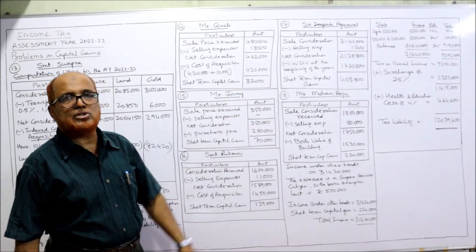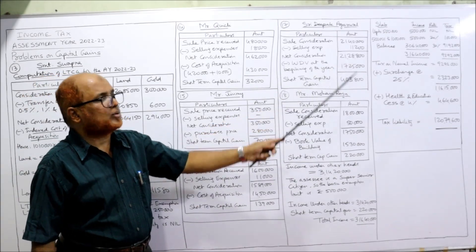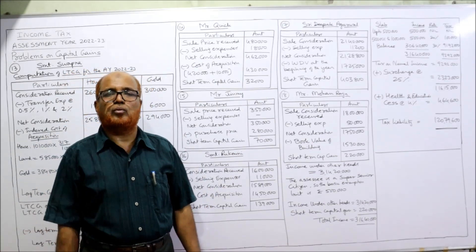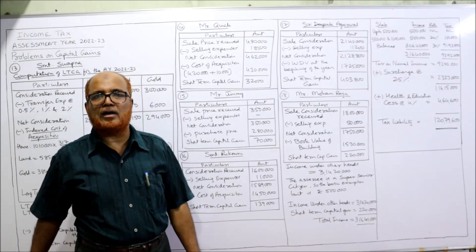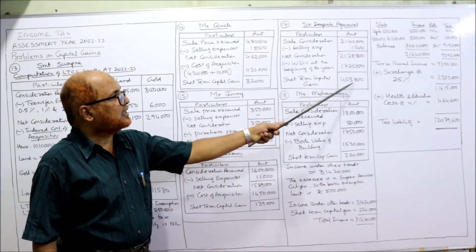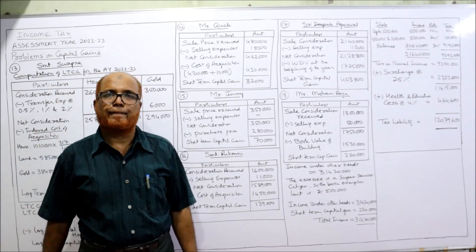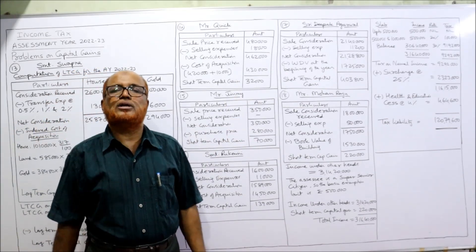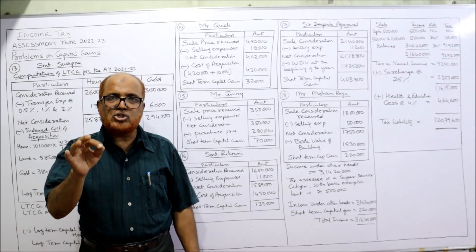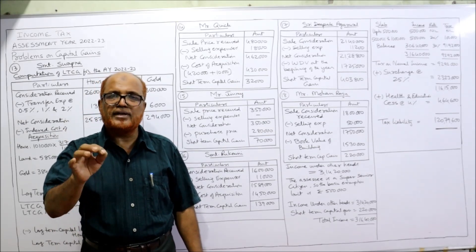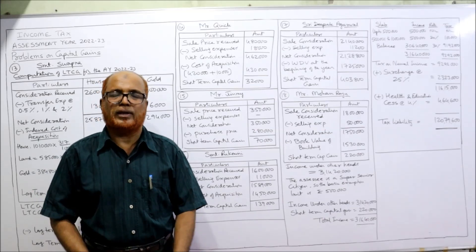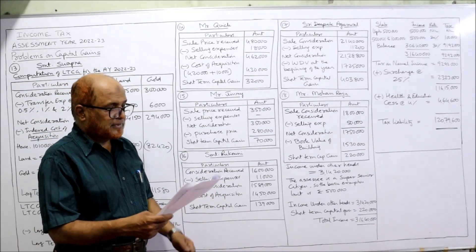Computation for Mr. Deepak Agarwal: sale consideration ₹21,40,000 minus selling expenses ₹11,200 = net consideration ₹21,28,800. From this we deduct not the cost of purchase but the written down value at the beginning of the year: ₹17,25,000. Short-term capital gain: ₹4,03,800. In the working note write: any depreciable asset used in the business, when sold, always gives short-term capital gain irrespective of the period of holding.